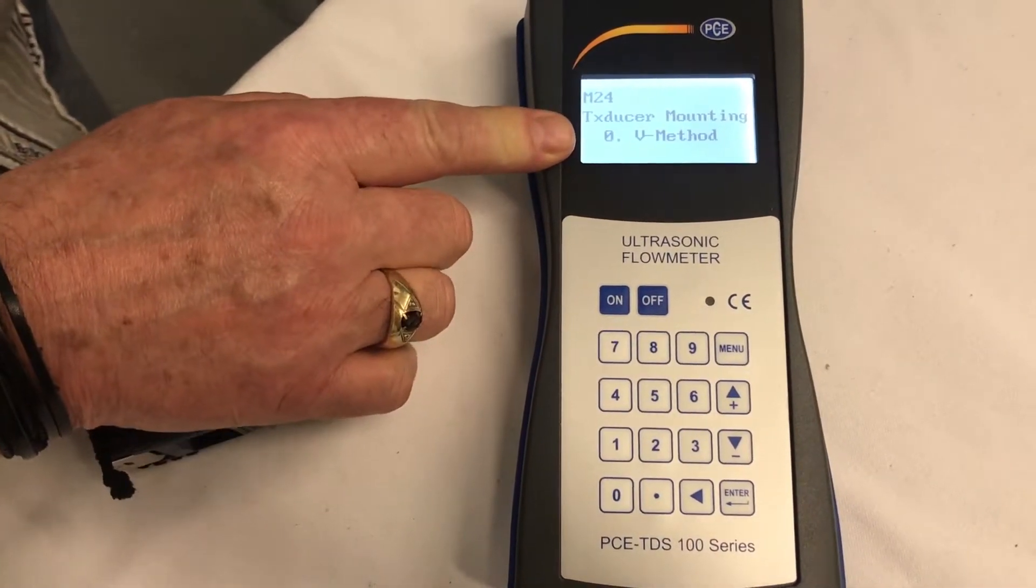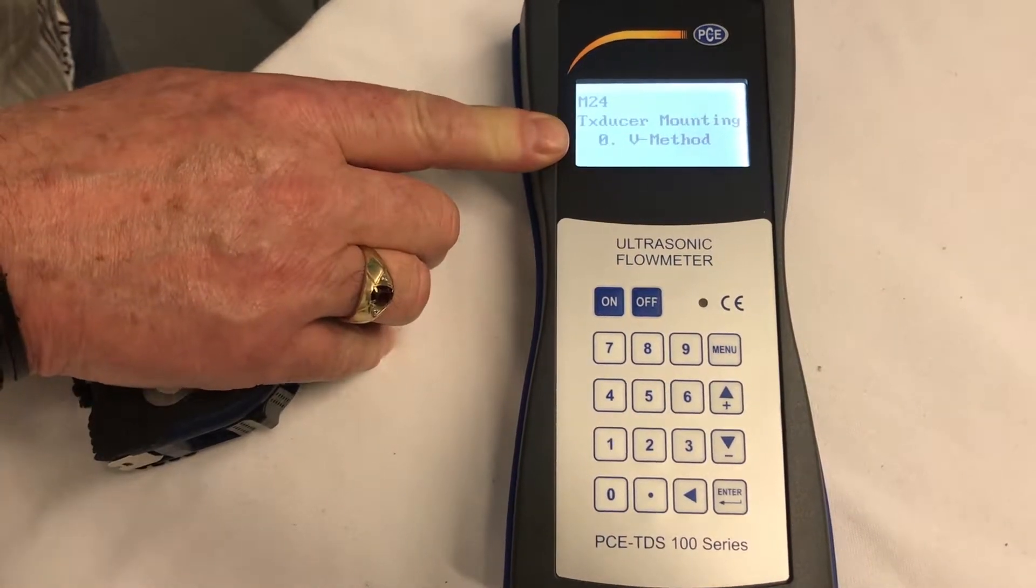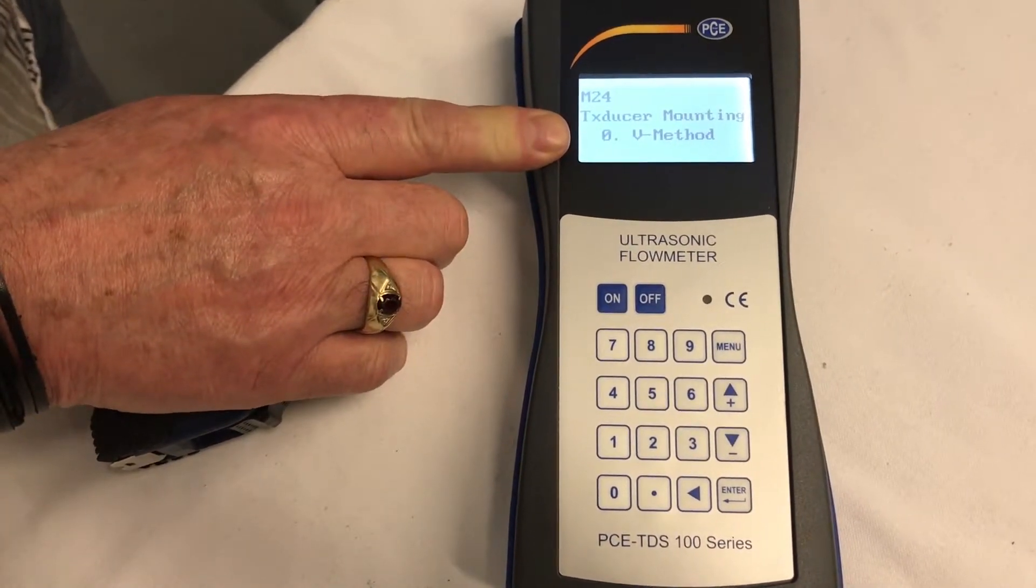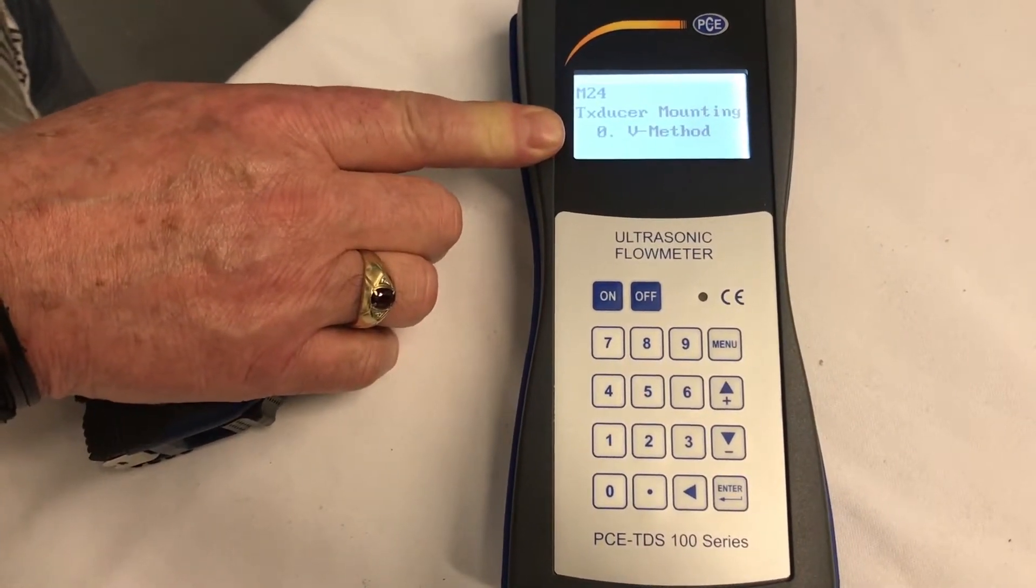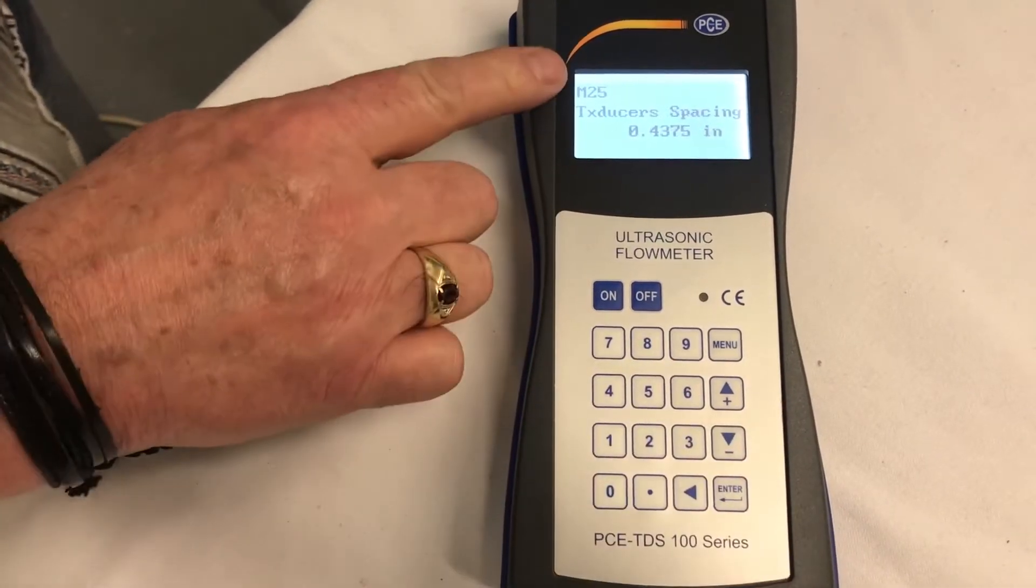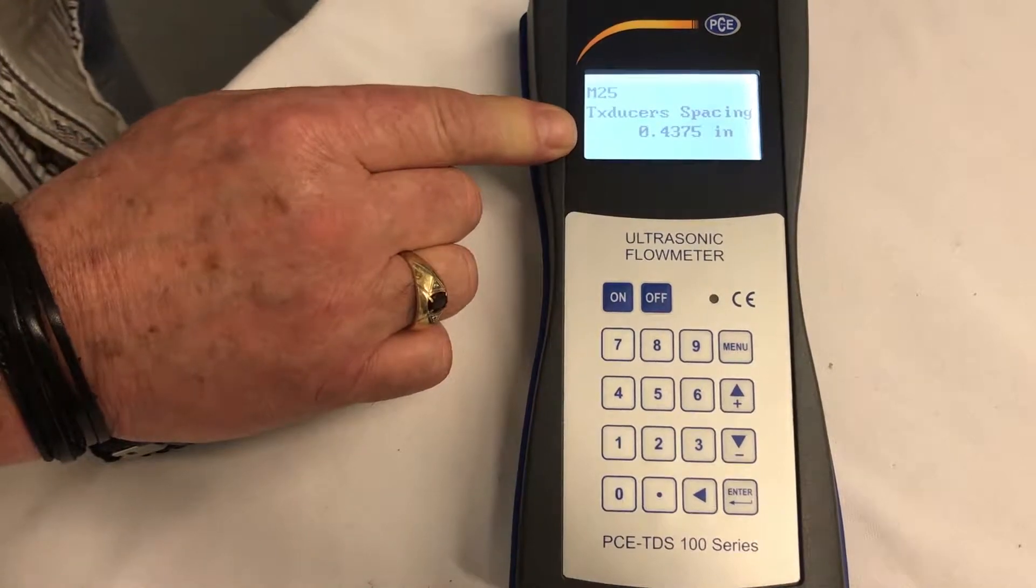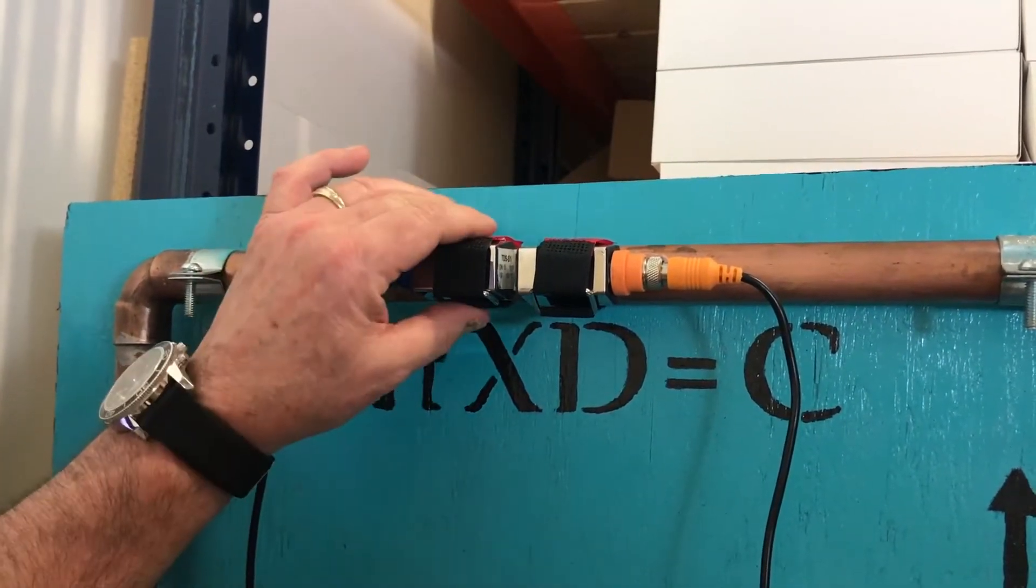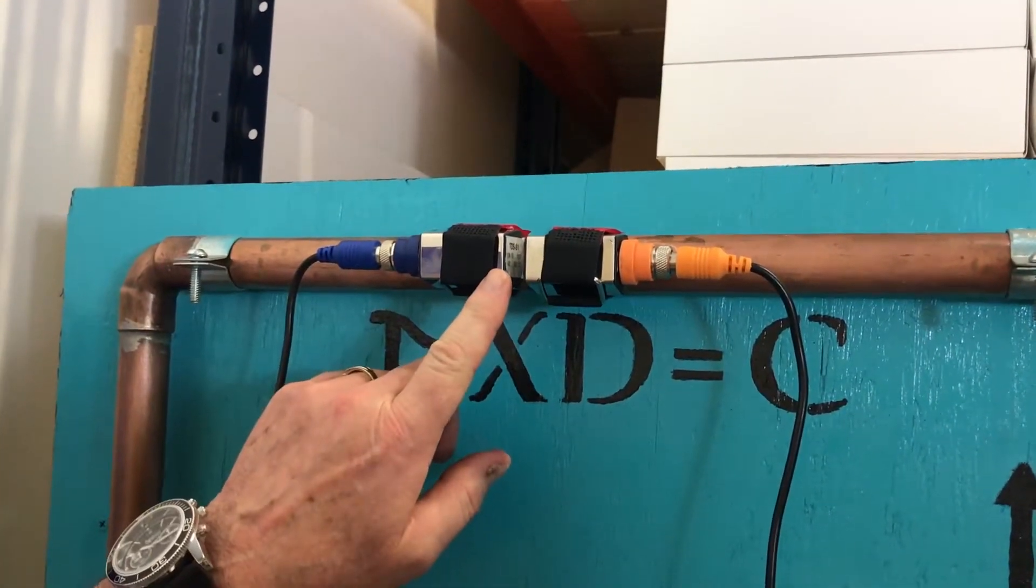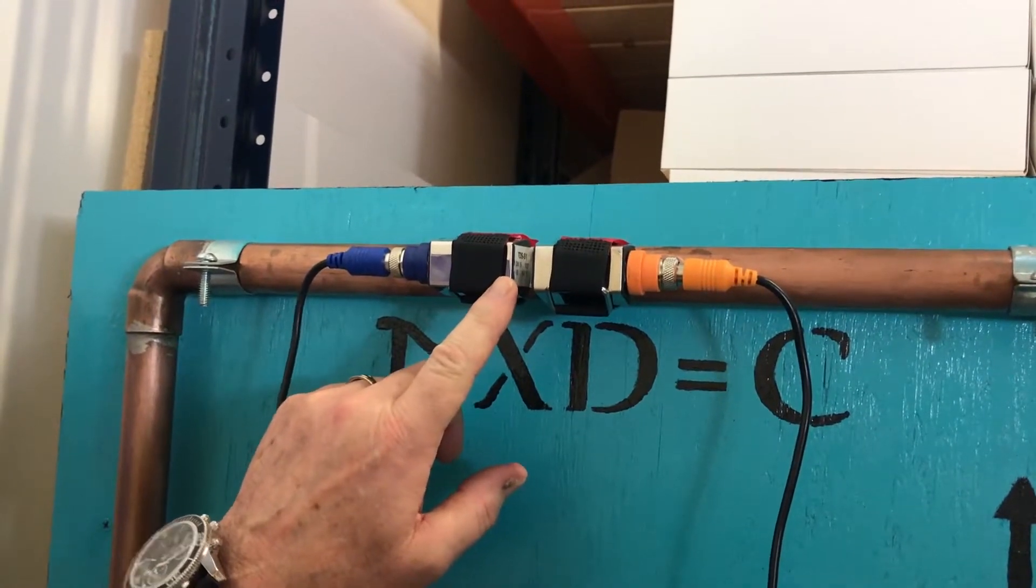Now we have the V method. Since we have the V method, that will tell us the distance between the sensors that we have to maintain, which is M25. There's the distance between the sensors that we need. The meter tells us that we need to space the sensors 0.4375.